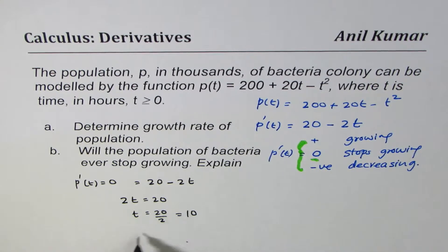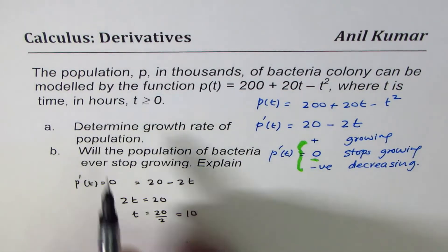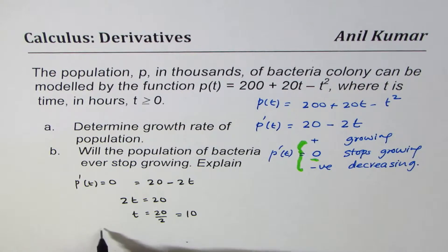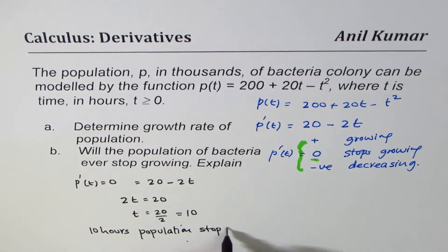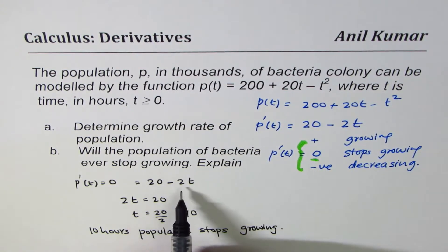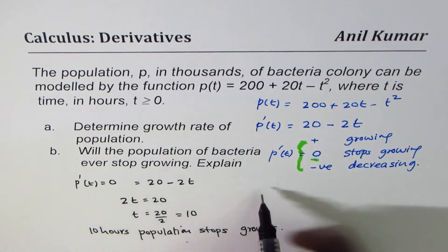So at this time when t is 10, and t is in hours, at 10 hours, population stops growing. You can note, if t is more than 10, it starts decreasing because the number becomes negative. Now you could also find the population when t is 10.